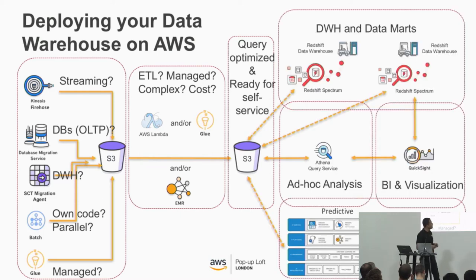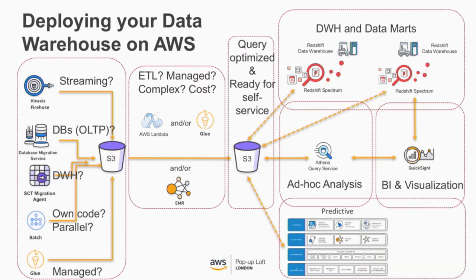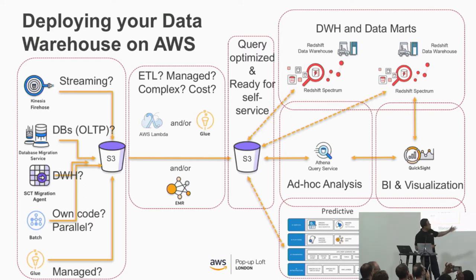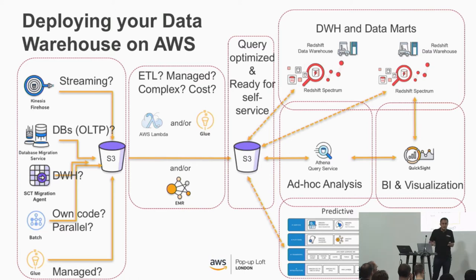Once the data is on S3, you can decide how you're going to analyze it. The data is immediately queryable through Amazon Athena and you can run SQL queries straight away. Or you can think of a data warehouse-style implementation using Amazon Redshift. We recently launched Amazon Spectrum, which we'll cover in more detail. And once the data is there, you can decide how you want to visualize it — using QuickSight or partner solutions like Tableau and Qlik — and also do predictive analytics. The key advantage of this structure is you have options and choices. This pattern covers the majority of data warehousing use cases.